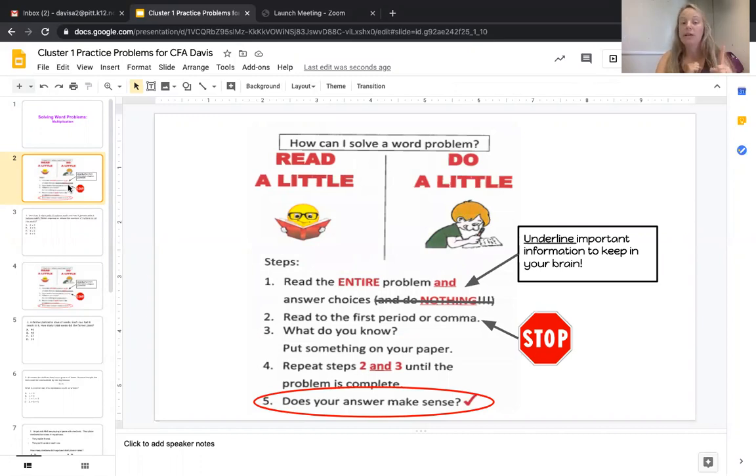Step one: Read the entire problem and the answer choices and don't do any math, but underline important information that you think your brain needs to know. Step two: Start back at the beginning and read the first sentence and stop when you get to a comma or a period. I even stop when I get to the word 'and' because 'and' means something more is going to happen.